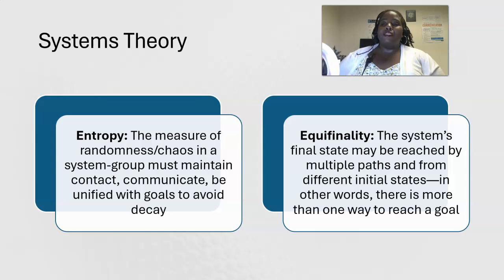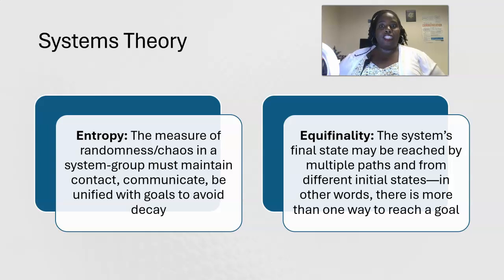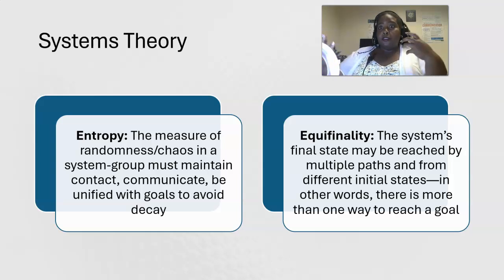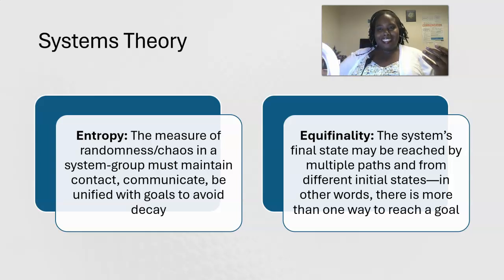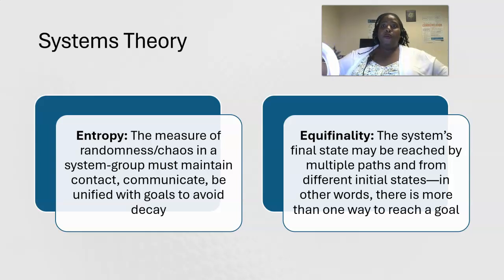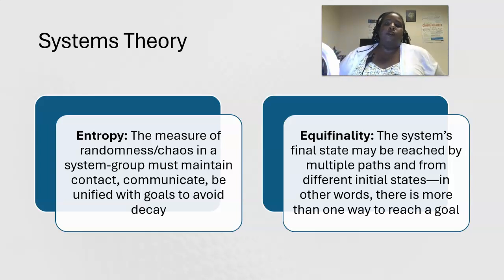Equifinality is the system's final state, which is reached by multiple paths and different initial states. In other words, there's more than one way to reach a goal. At the end of the semester or at the end of each project, there are different groups and different content — and when the group reaches that final state, that's equifinality.